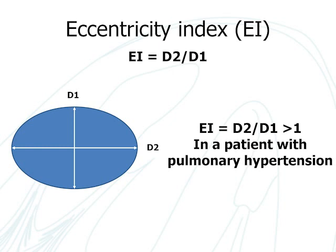The eccentricity index is a measure of the degree of distortion of the left ventricle, and it can be calculated from the short axis view at the level of the left ventricular papillary muscles. It is calculated by measuring the minor axis of the left ventricle parallel to the septum, D2, and the minor axis of the left ventricle perpendicular to the septum, D1. The eccentricity index is calculated by dividing D2 by D1.